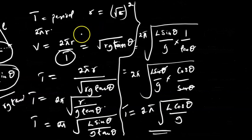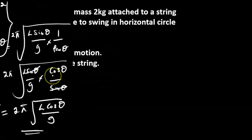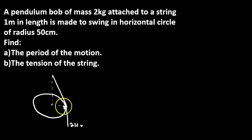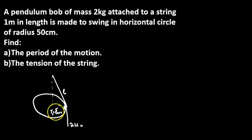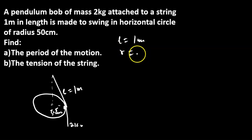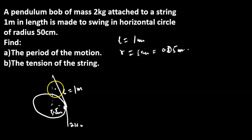Now let's work through an example. A pendulum of mass 2 kg moves in a circular path. It is attached to a string of length l = 1 meter, and the radius r = 50 cm = 0.05 meters.